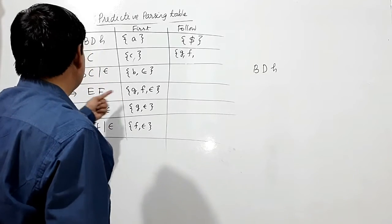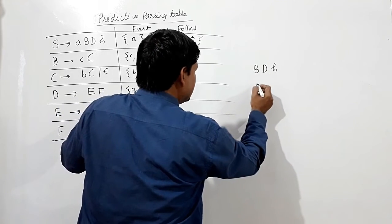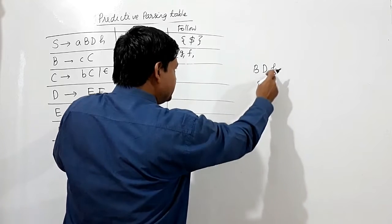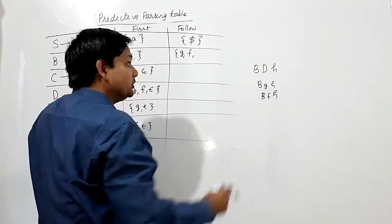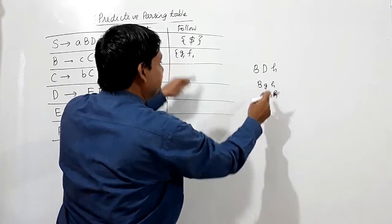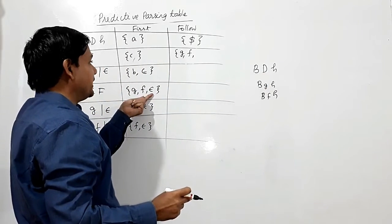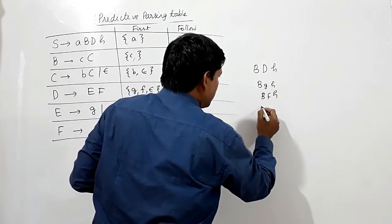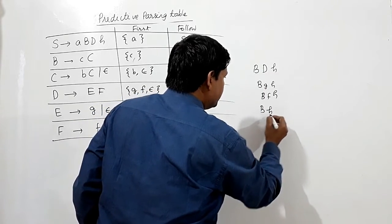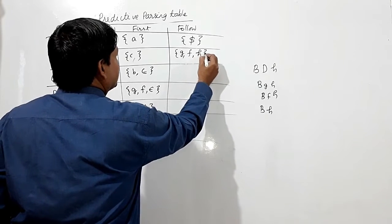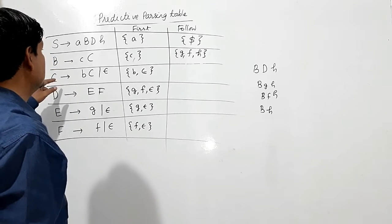D can be replaced with G or F. If D is replaced by Epsilon, then D vanishes and B is followed by H. So FOLLOW(B) = {G, F, H}.